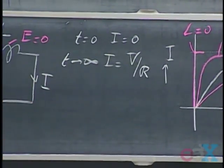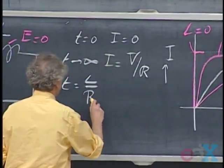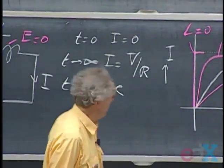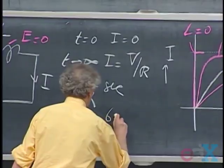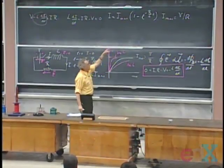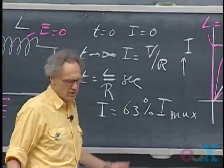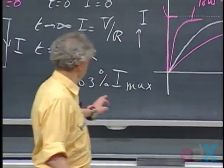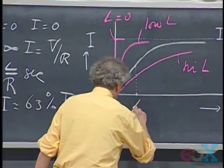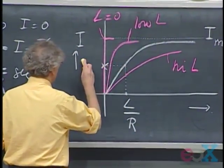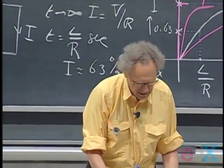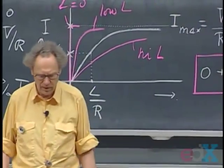If you wait L/R seconds — convince yourself that L/R has units of seconds — the current is about 63% of I_max, because you get 1 minus 1/e ≈ 0.63. If you wait double this time, you have about 86% of the maximum current. So after L/R seconds this value is about 0.63 times the maximum, climbing up and asymptotically approaching V/R.